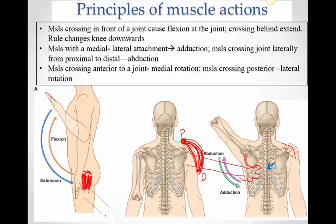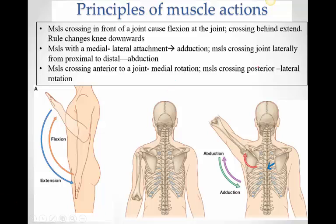Muscles crossing in front of a joint naturally cause medial rotation — they pull on the anterior aspect and turn it medially. Muscles crossing behind pull on the posterior aspect and turn it laterally. Remember these rules and it becomes easier to understand the action of any muscle without having to memorize the actions.